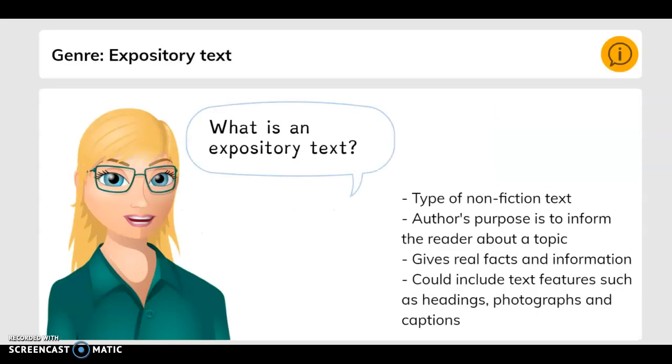What is expository text? Type of non-fiction text. Author's purpose is to inform the reader about a topic. Gives real facts and information. Could include text features such as headings, photographs, and captions. And that word is expository. Expository text.